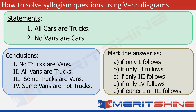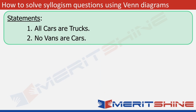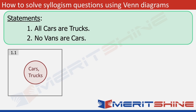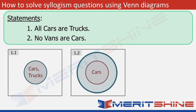Let's concentrate on the statements first and make their Venn diagrams. The first statement is: All cars are trucks. There will be two cases. In figure 1.1, one circle denotes both cars and trucks — meaning all cars are trucks and all trucks are cars; the two sets are equal. In the second possibility, figure 1.2, cars is the smaller circle contained within trucks, meaning all cars are trucks but there are some trucks that are not cars.